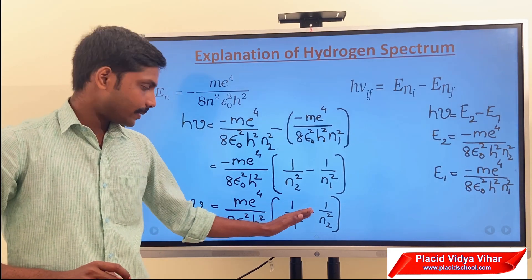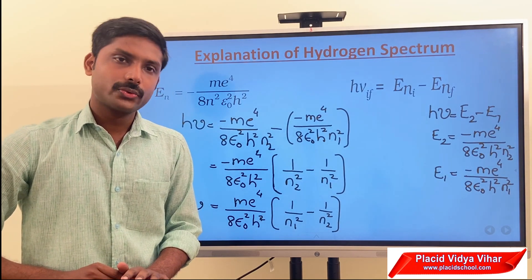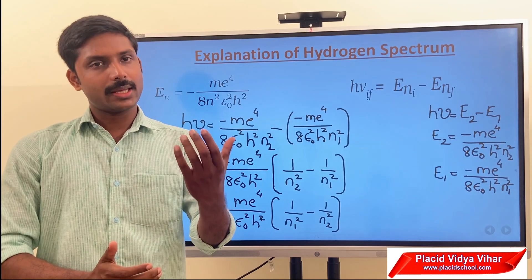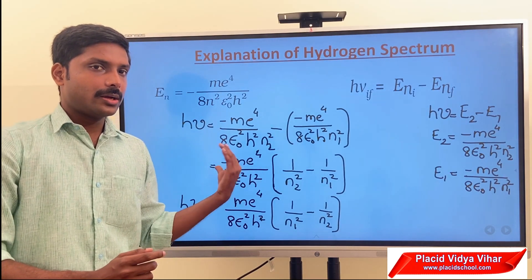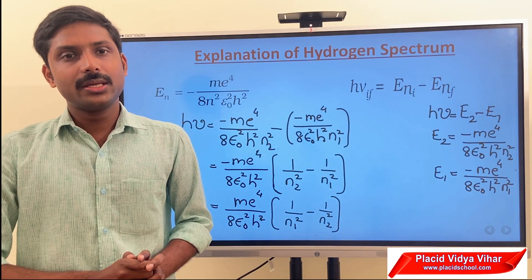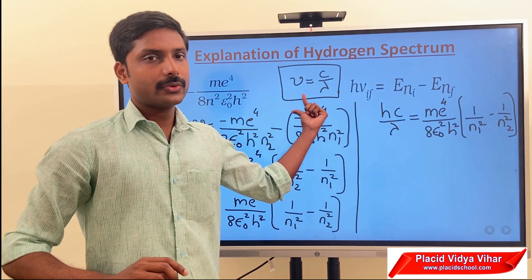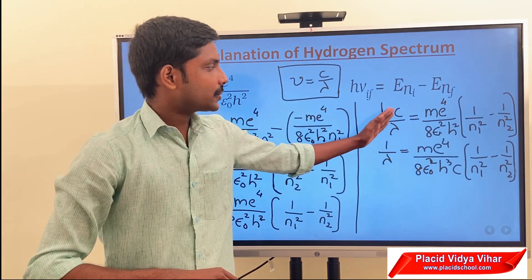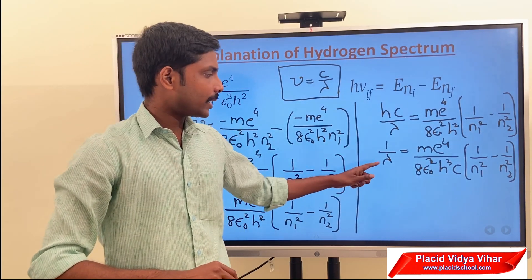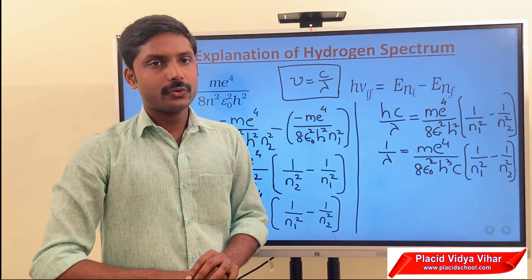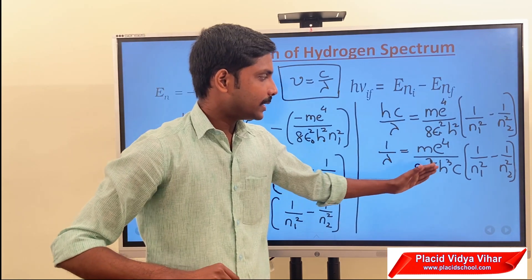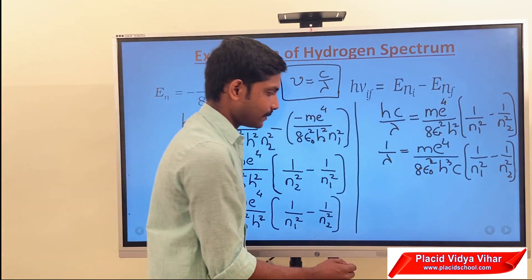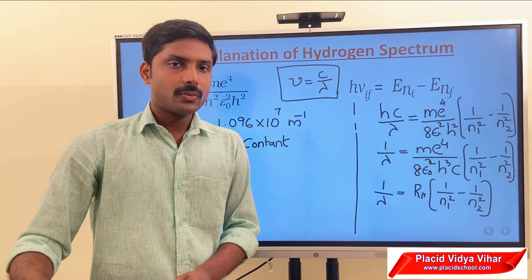Since radiation is light, and we know that nu equals c over lambda, we replace nu with c over lambda. Rearranging the terms and moving h and c to the right side, we are left with: 1 over lambda equals m e to the power 4 by 8 epsilon-squared h-cubed c, multiplied by 1 over n1-squared minus 1 over n2-squared.